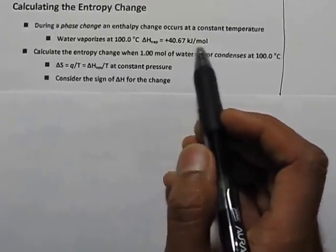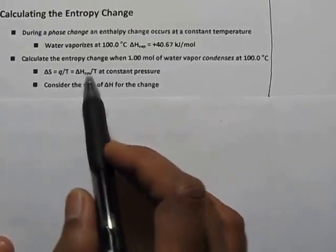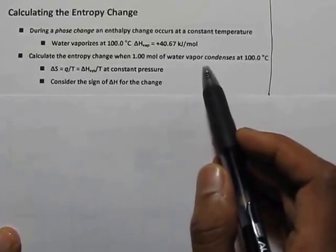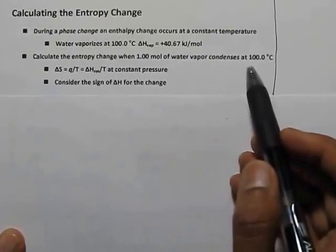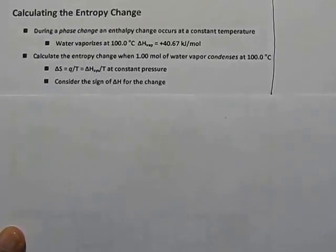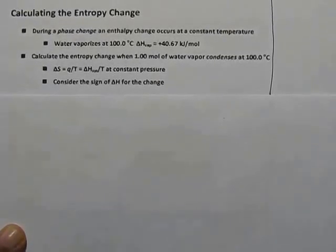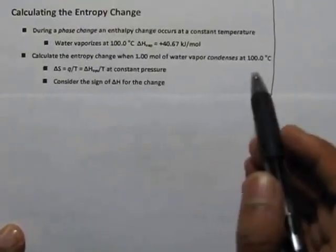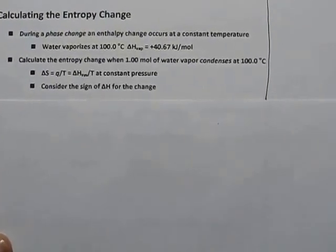We have to calculate the change in entropy for one mole of water when water vapor condenses at 100 degrees Celsius. So we have to find out the change in entropy for condensation of water.